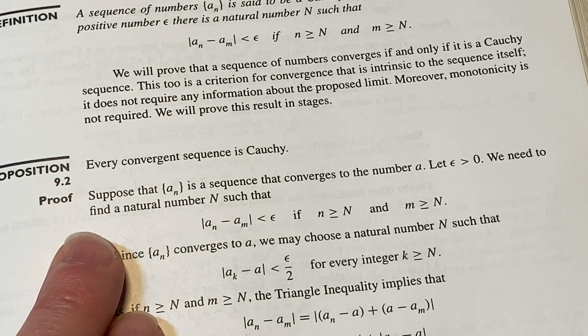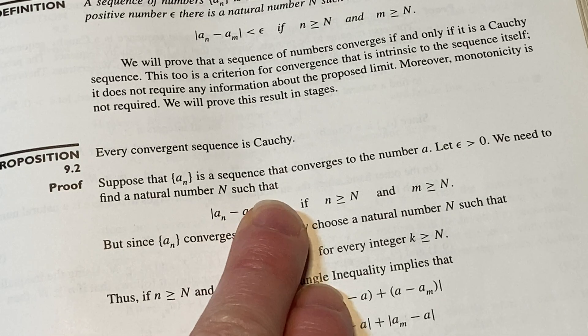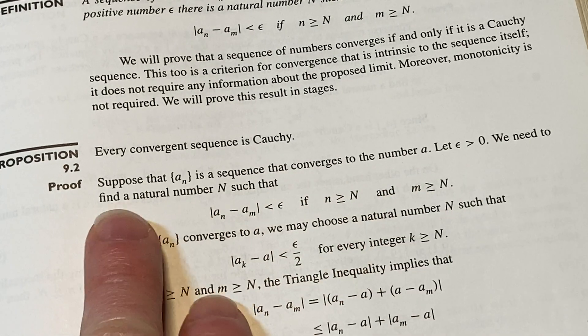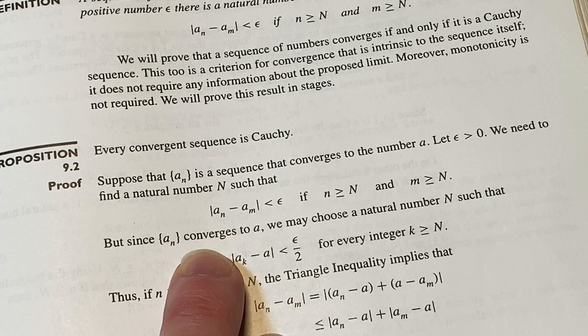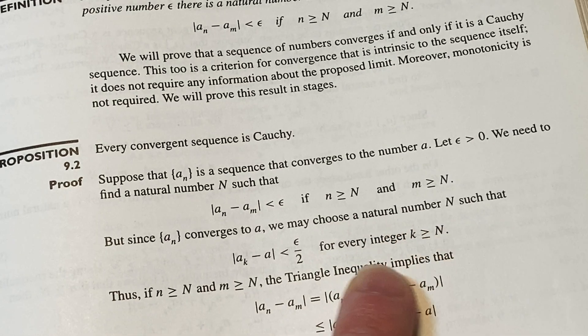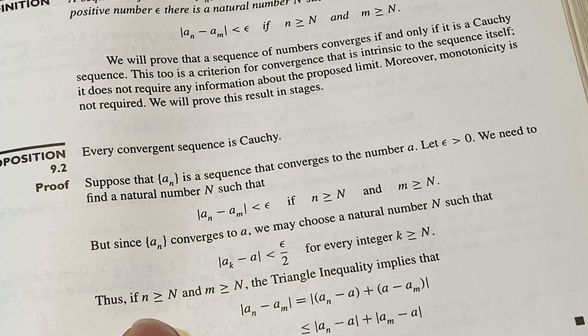Every convergent sequence is Cauchy. So suppose the sequence converges to some number, say a. Let epsilon be greater than zero. Then you define an N such that that is true. But since it converges to a, we may choose a natural number N so that that is true for every k greater than or equal to N. Correct.